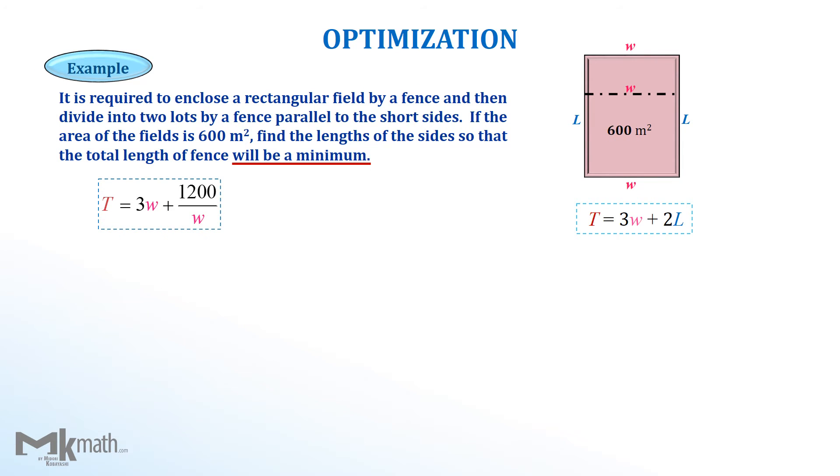Step 3, taking the derivative and letting it be zero to get the critical value, which is the possible minimum value. Changing the objective function form to take the derivative easier.